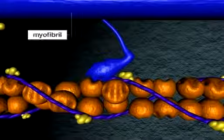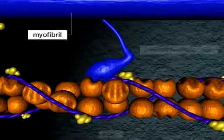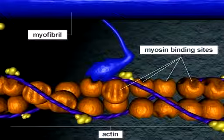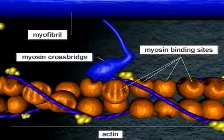With calcium elevated around the myofibrils, myosin binding sites on actin are exposed, allowing interaction of the myosin cross bridges with actin.